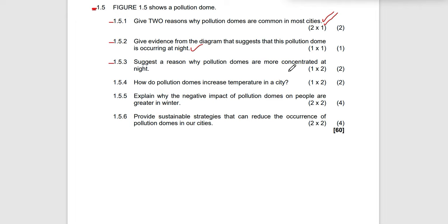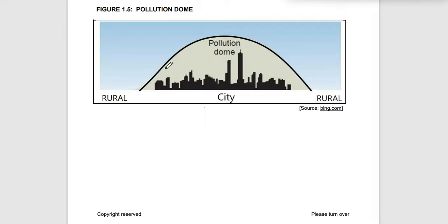Question 1.5.3: Give a reason why pollution domes are more concentrated at night. During the night there is more subsiding cold air. This subsiding cold air means the pollutants are not able to continue rising from the city — they are trapped and suppressed by the sinking air, which is very cold and dense. That is how these pollutants get trapped and remain concentrated around the city.